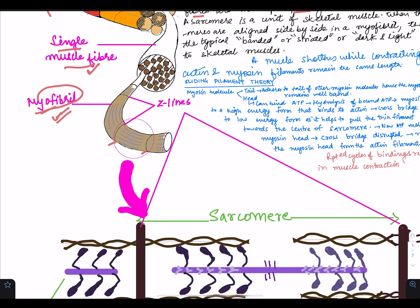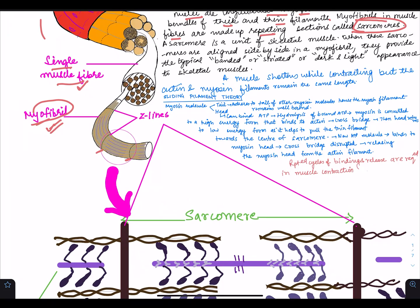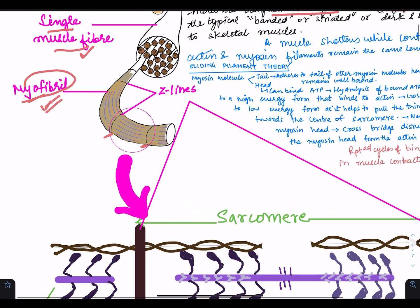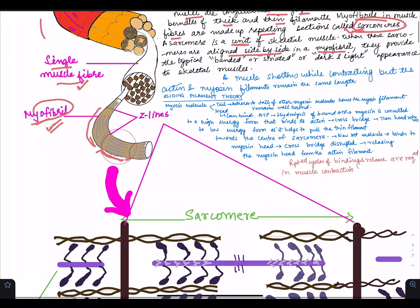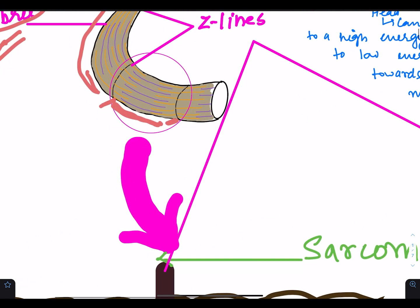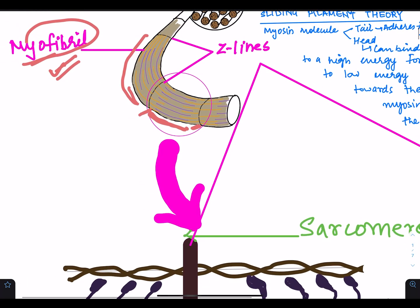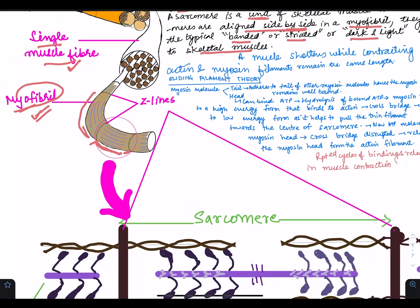This whole encircled part of this myofibril is a sarcomere. A sarcomere is the unit of skeletal muscle — we will get MCQs asking what is the unit of skeletal muscle, and the answer is sarcomere. When sarcomeres are aligned side by side in a myofibril, they provide the typical banded, striated, or dark and light appearance to skeletal muscles. If we enlarge this diagram, we can see that the myofibrils are dark and light.